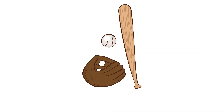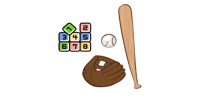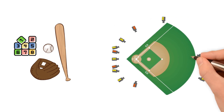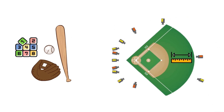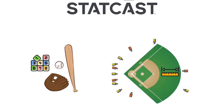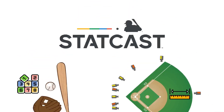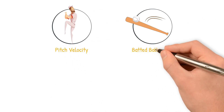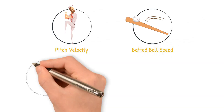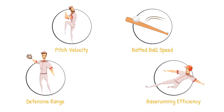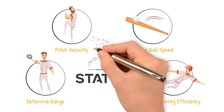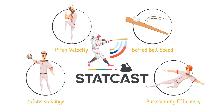Baseball has always been a game of numbers, but in recent years, one system has changed how we measure everything on the field: StatCast. From pitch velocity to batted ball speed, from defensive range to base running efficiency, StatCast has revolutionized baseball analytics.